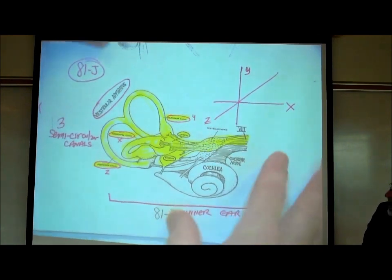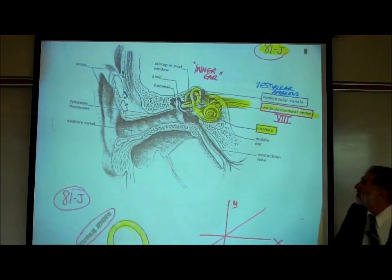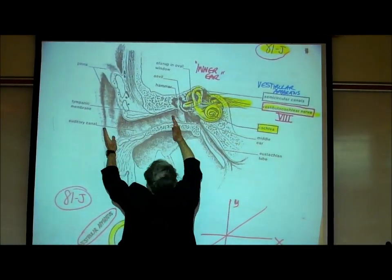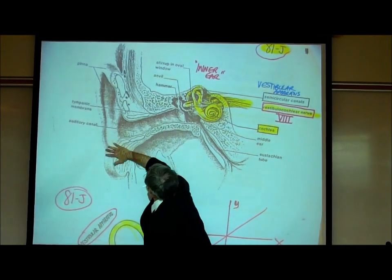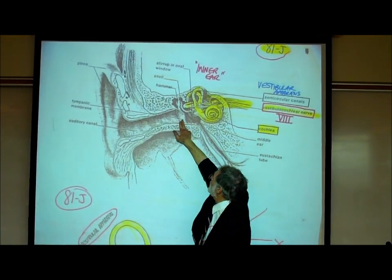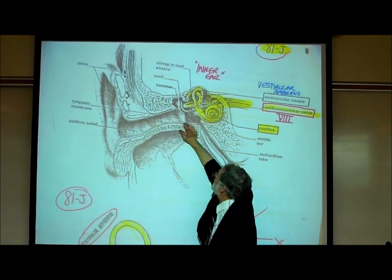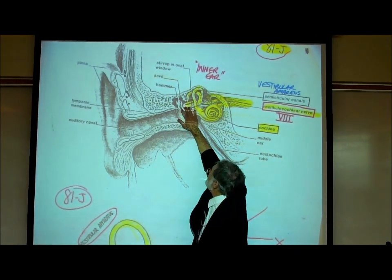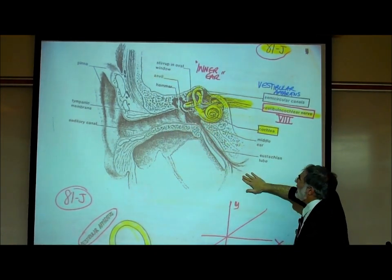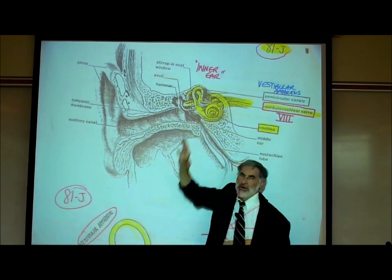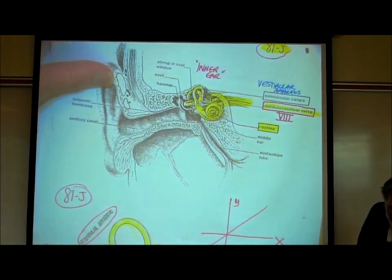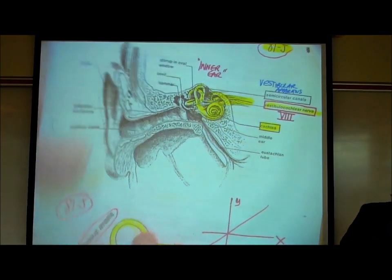So we've talked about what is called the outer ear — that's the pinna, the auditory canal, and the tympanic membrane or eardrum. The middle ear, which is the three ear bones and the eustachian canal. And the inner ear, which is the cochlea and the vestibular apparatus.